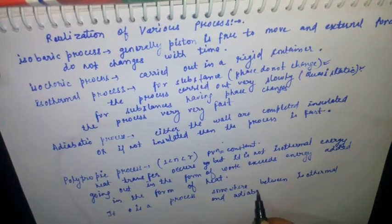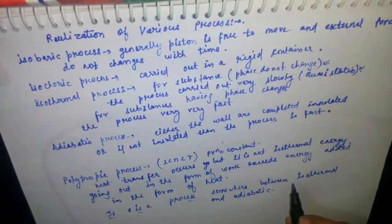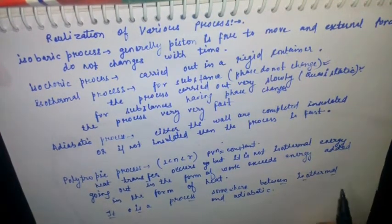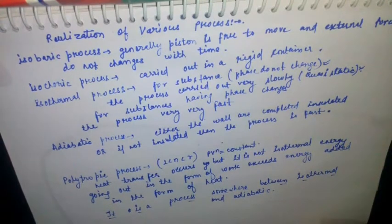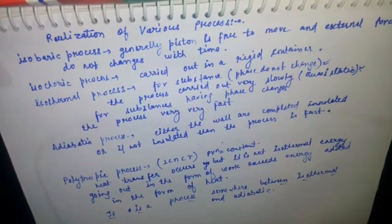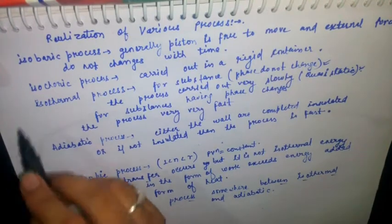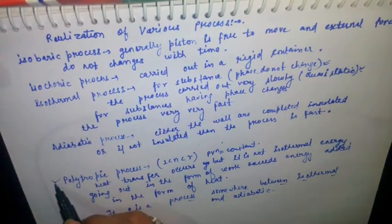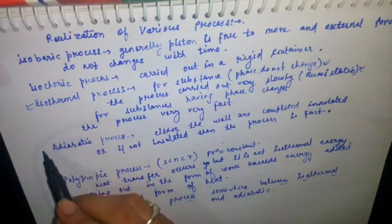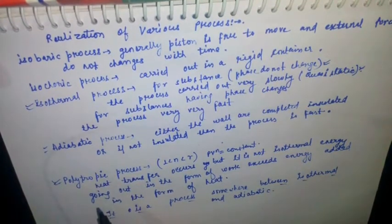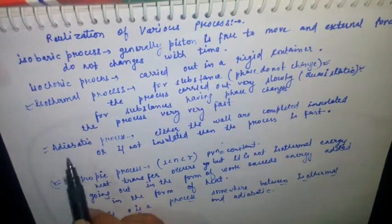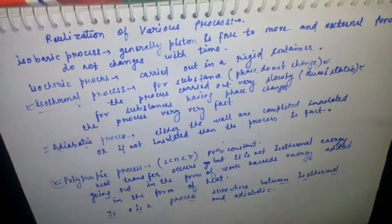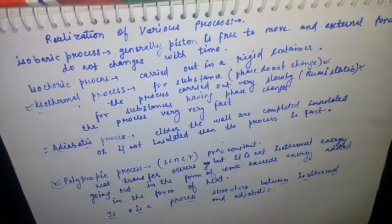This must be remembered, because while drawing the PV diagram and the curve of the polytropic process, the curve always lies in between the isothermal and adiabatic curves. The curve of the polytropic process always lies in between the adiabatic process and isothermal process.